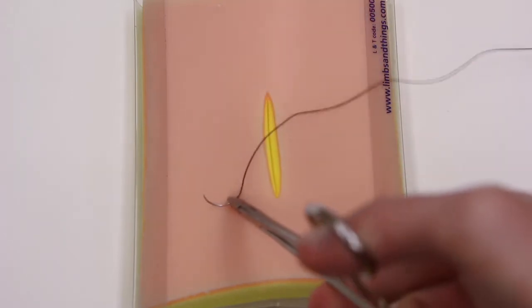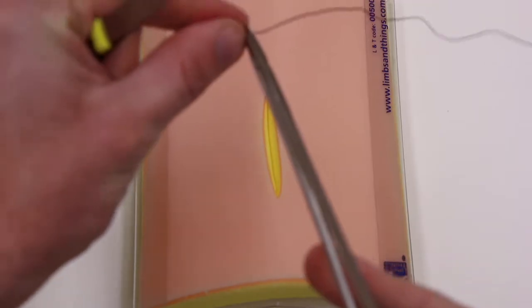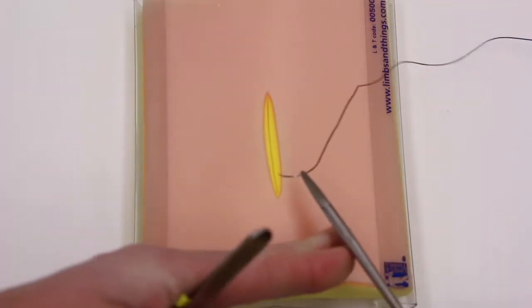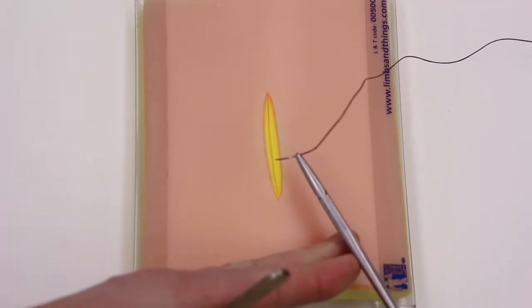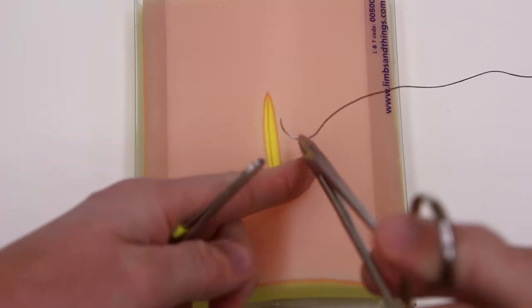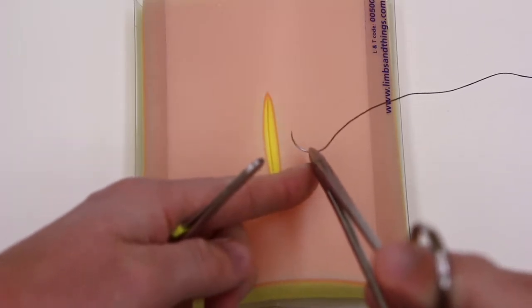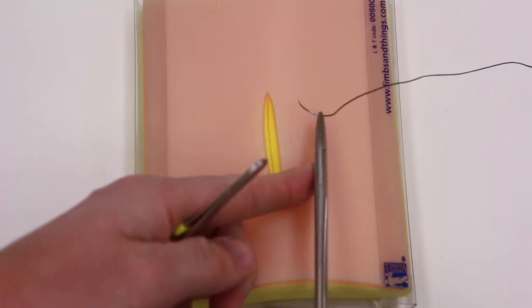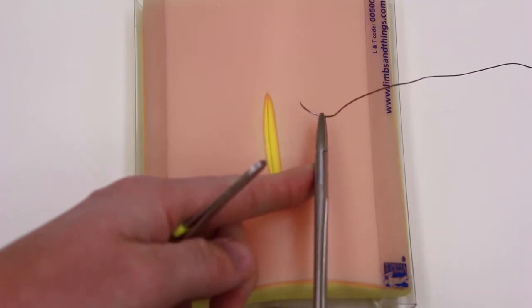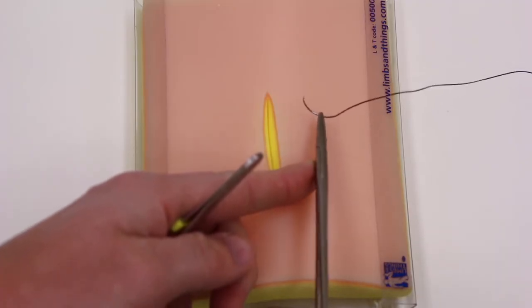First thing to work on is just loading the needle correctly. So you want to load the needle just on the tip of the needle driver, approximately one-half to two-thirds the way from the pointy end. That just gives you a balance of control of the needle and range.